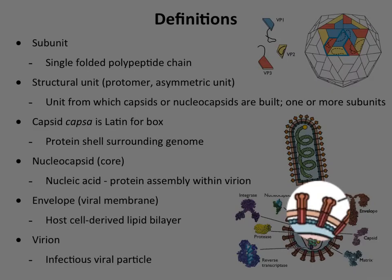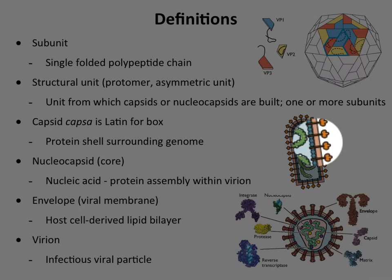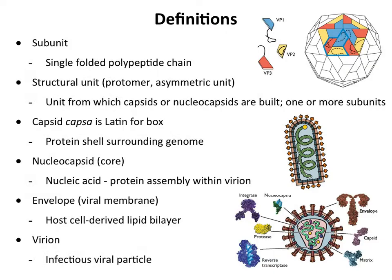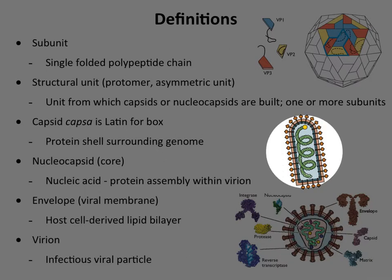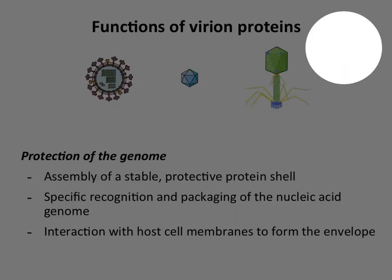The envelope is what we call the membrane around the particle. Here in this retrovirus, that's the envelope. Here in rabies, that's the envelope right there. These are lipid membranes derived from the host cell. And finally, the virion is the infectious virus particle. Whenever I say virion, I mean the infectious particle — that's assumed. If you say 'virus particle,' there's no assumption about infectivity. So this is a retrovirus virion, this is a rabies virion, and this is a poliovirion.